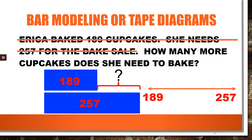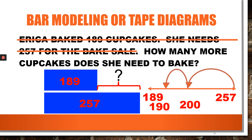Another child might think of it like this on a number line, from 189 to 257. They may count up to 200, which is 11. Then they may count up another 57 to 257. So I have a total of 68 — the same answer obtained from the other method.